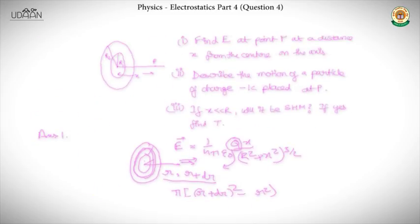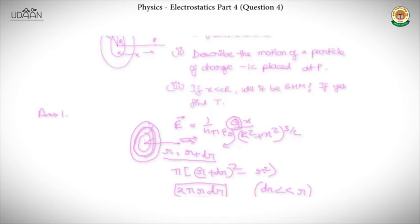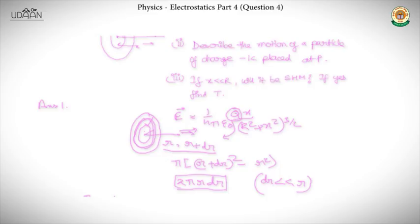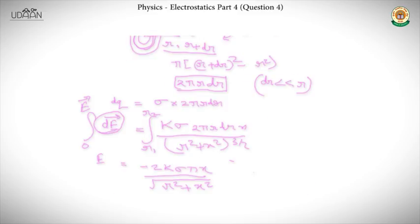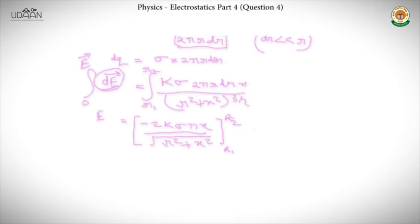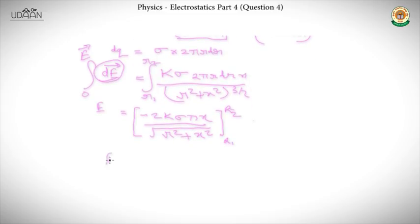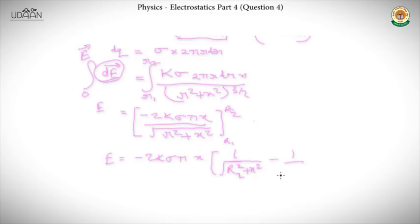So the first part is solved. Putting in the limits, E equals minus 2k·sigma·pi·x times [1/√(r2² + x²) minus 1/√(r1² + x²)]. This is the answer for the first part.